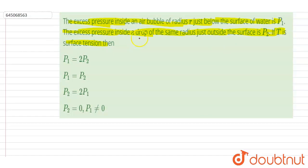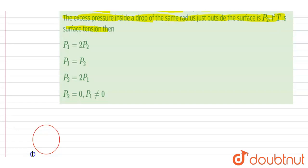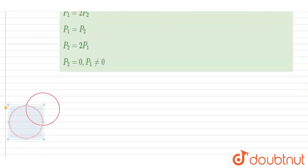So let's say this is a drop. Radius here is r.